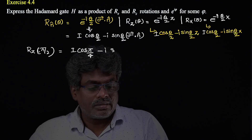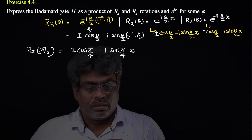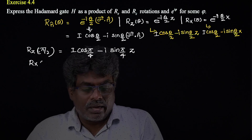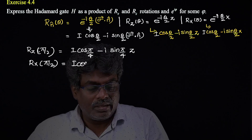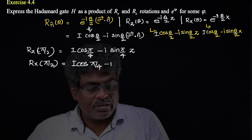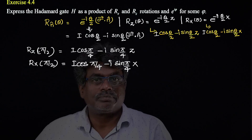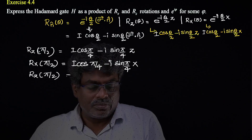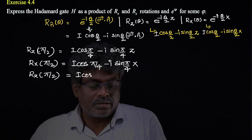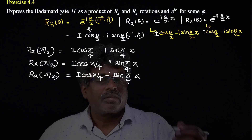Explicitly, the three matrices are: Rz(π/2) = I·cos(π/4) - i·sin(π/4)·Z, then Rx(π/2) = I·cos(π/4) - i·sin(π/4)·X, and again Rz(π/2) = I·cos(π/4) - i·sin(π/4)·Z.